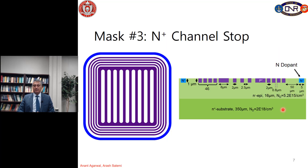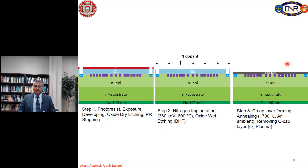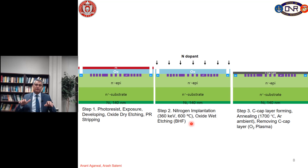Mask number 3 is the N+ channel stop. The processing is exactly the same as mask number 2 for the P+ guard rings and active area. For N+ we implant with nitrogen or phosphorus. The process flow is identical: silicon dioxide deposition, photoresist coating, exposure, developing, photoresist stripping, SiO₂ dry etching for the implant mask, nitrogen implantation at 360 keV at 600°C, and then buffered HF oxide removal after implantation.